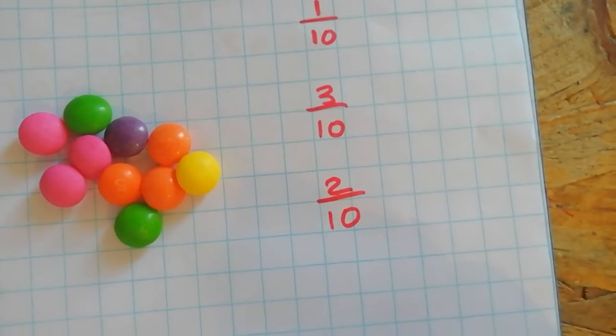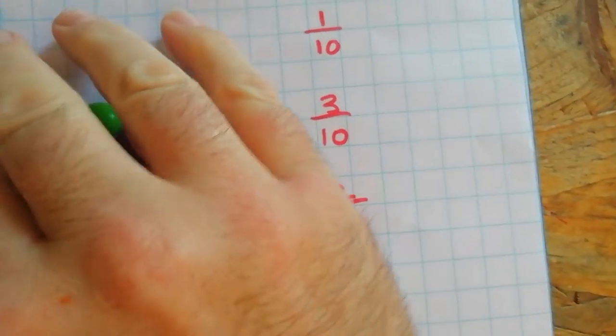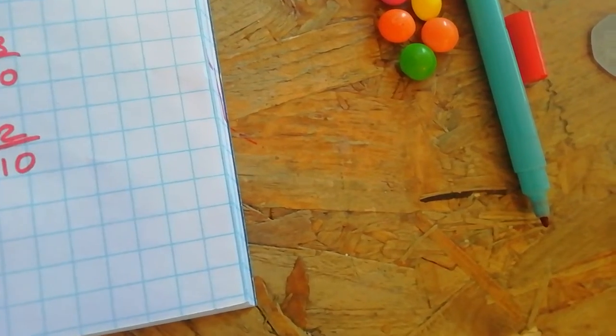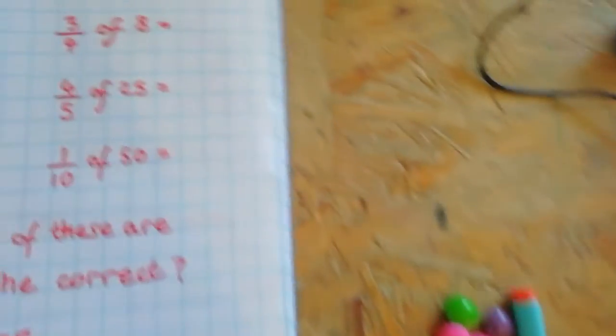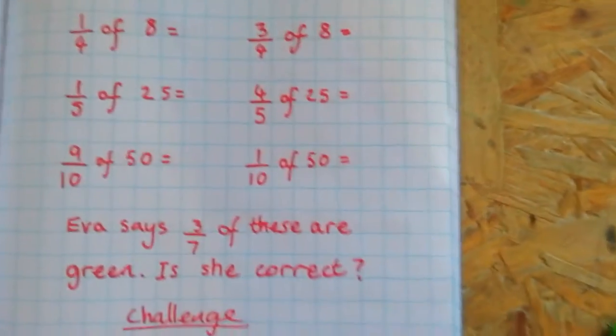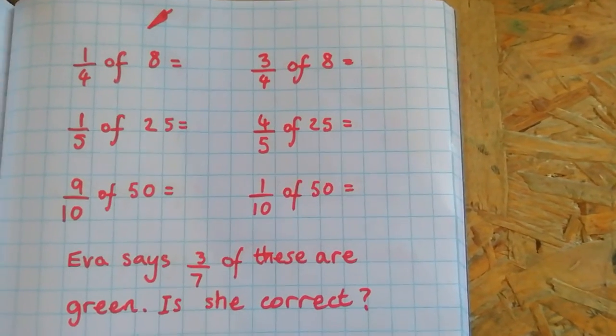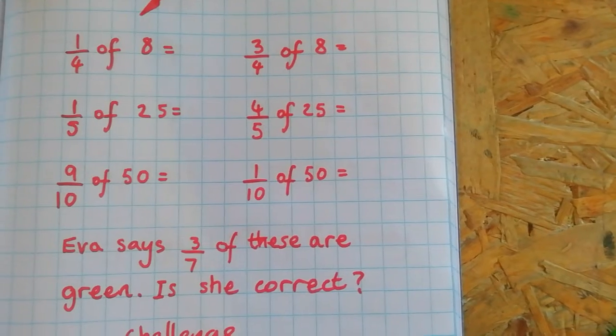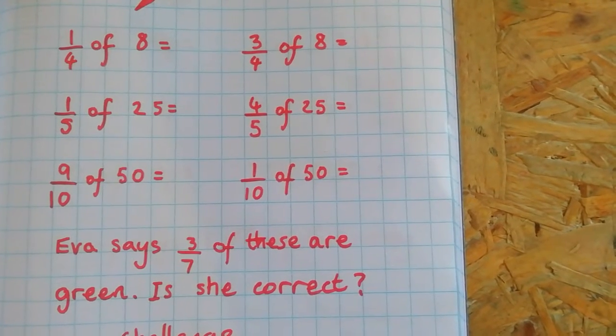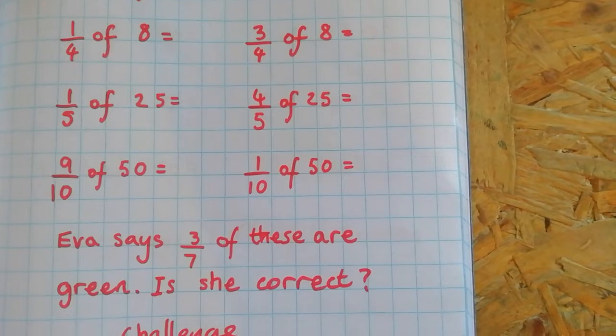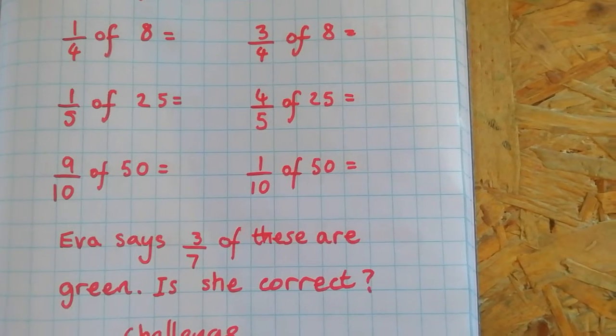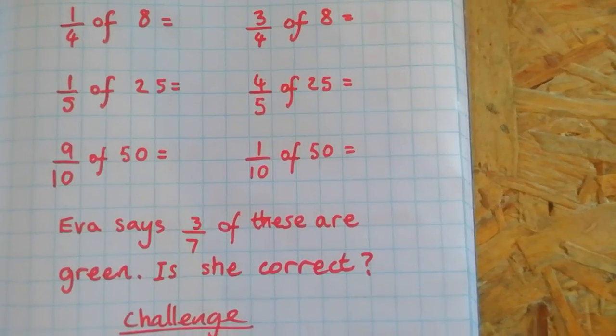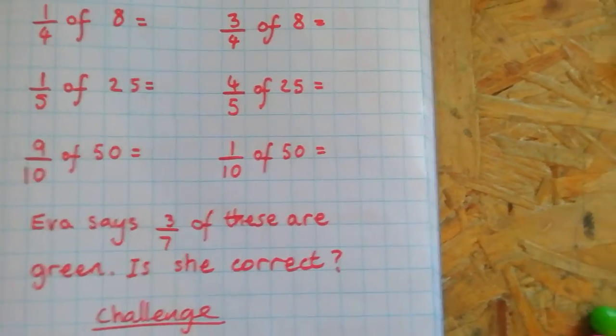So let's have a look at how we can use that for some of your questions. One chili. We want to know what a quarter of eight is, what three quarters of eight is, a fifth of twenty-five, four fifths of twenty-five, but we haven't got sweets, we haven't got a whole load of sweets.